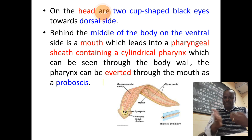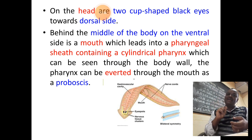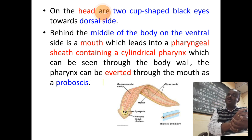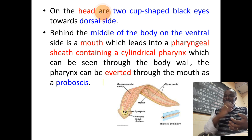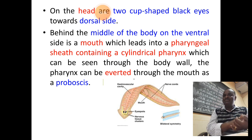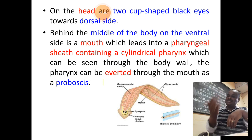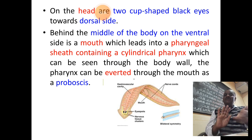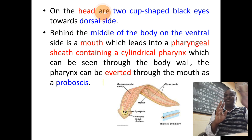On the ventral surface of the body, there is an oval or round aperture indicating the presence of the mouth, surrounded by a covering called the pharyngeal sheath, from which the pharynx protrudes. The pharynx is a cylindrical tube that moves out of the pharyngeal sheath and mouth, resembling the trunk or proboscis of an elephant — hence it is called a proboscis. The paired black cup-shaped eyespots indicate the dorsal surface, while the mouth and pharyngeal sheath indicate the ventral surface.